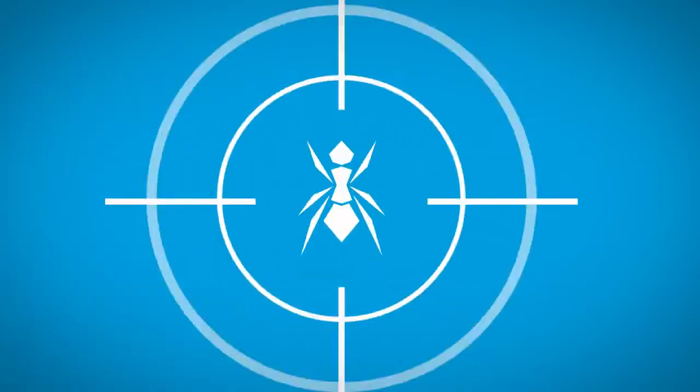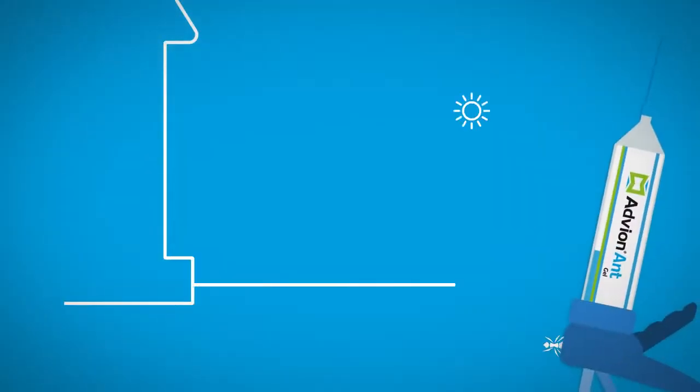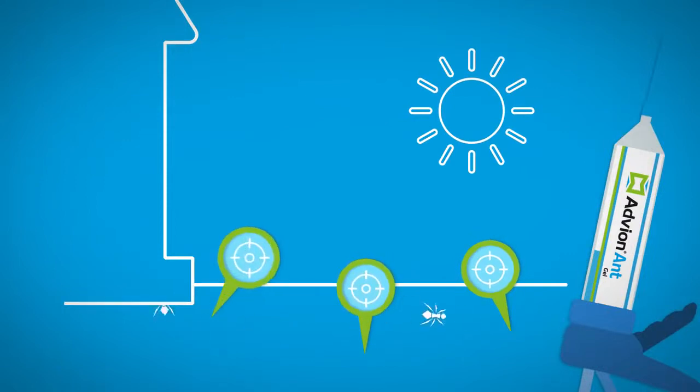For ants, this is not recommended. Apply Advion ant gel bait only along the ant trails and at the entrances into the building when you see living ants.